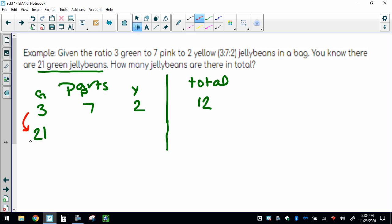3 times what gives us 21? Well, this is times 7. So we're going to multiply everything by 7. 7 times 7 gives us 49, 2 times 7 gives us 14.